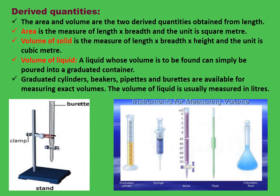The area and volume are two derived quantities obtained from length. Area is a measure of length and breadth and the unit is square meter. Volume of solid is a measure of length, breadth, and height and the unit is cubic meter.